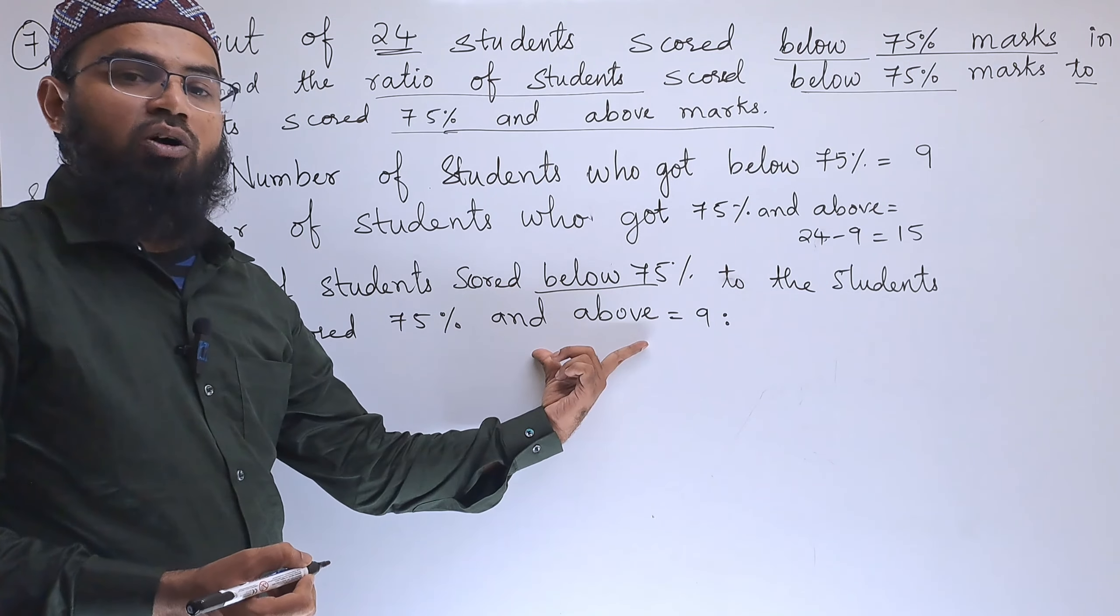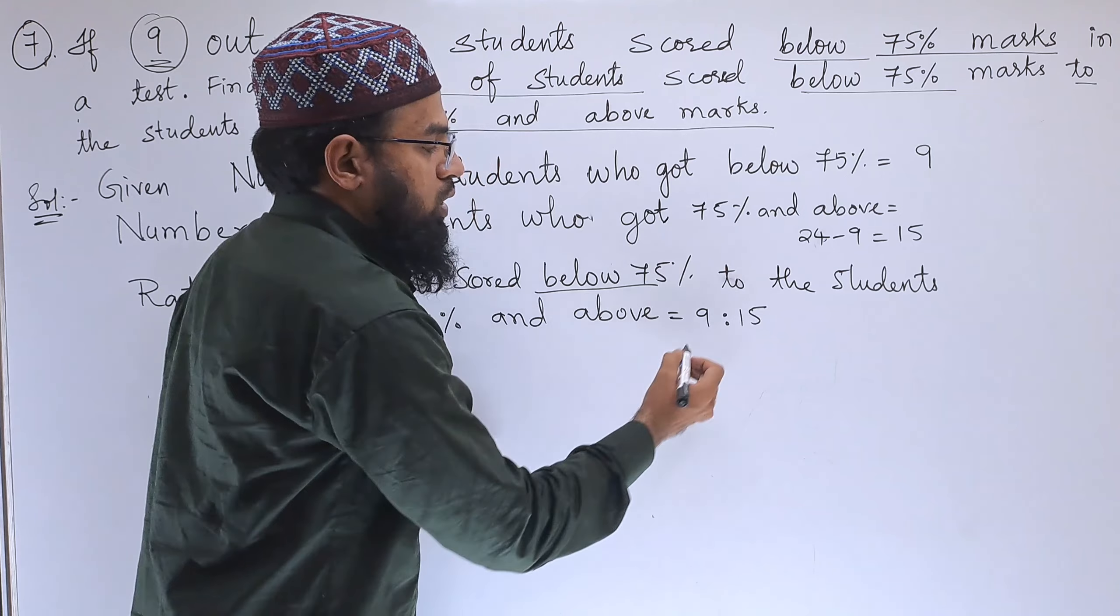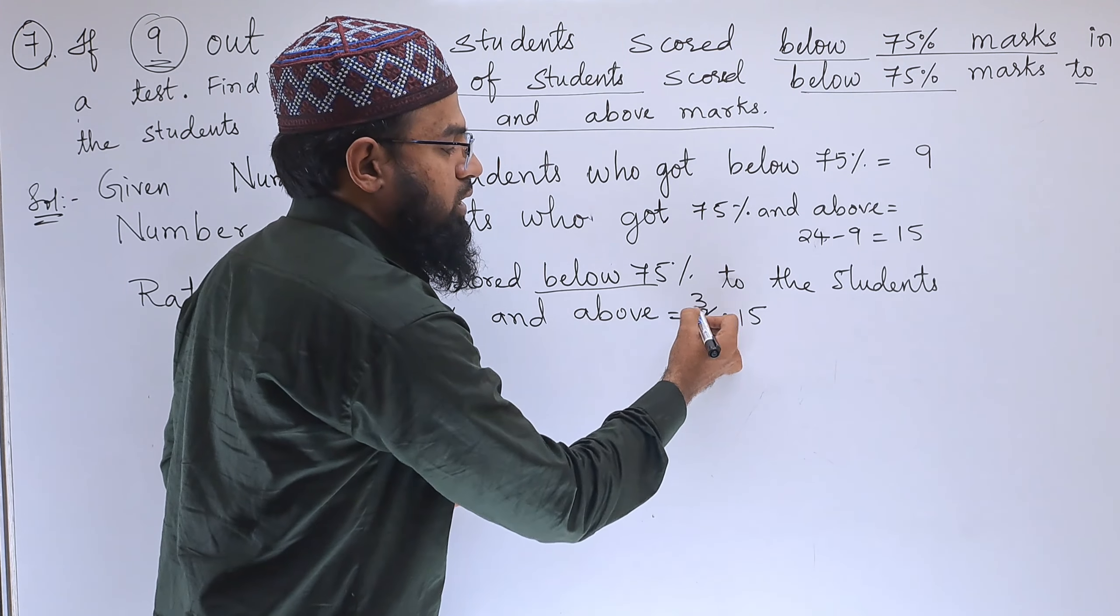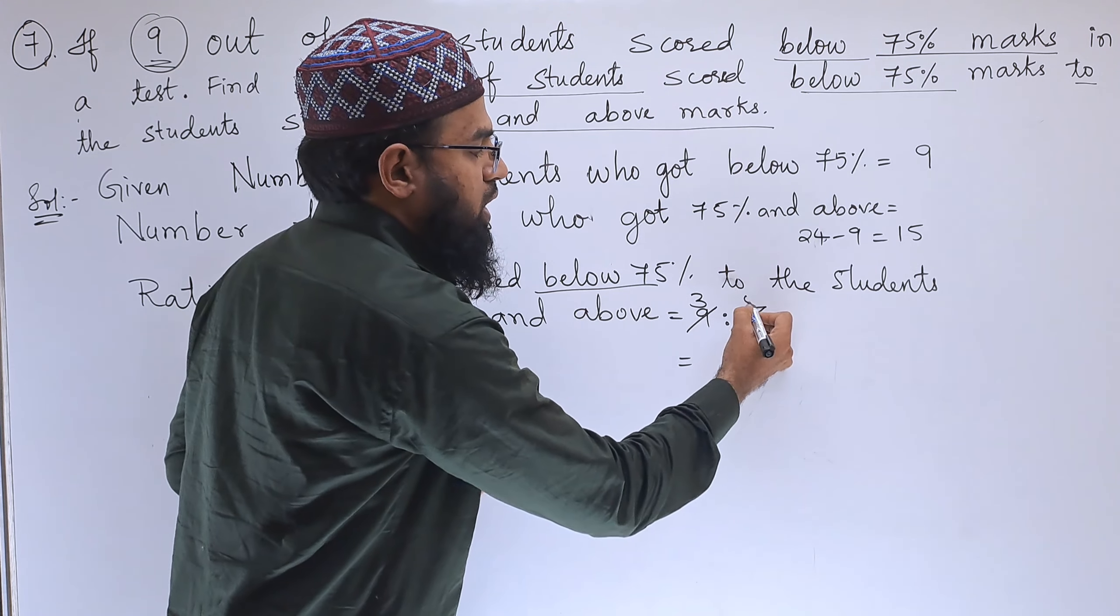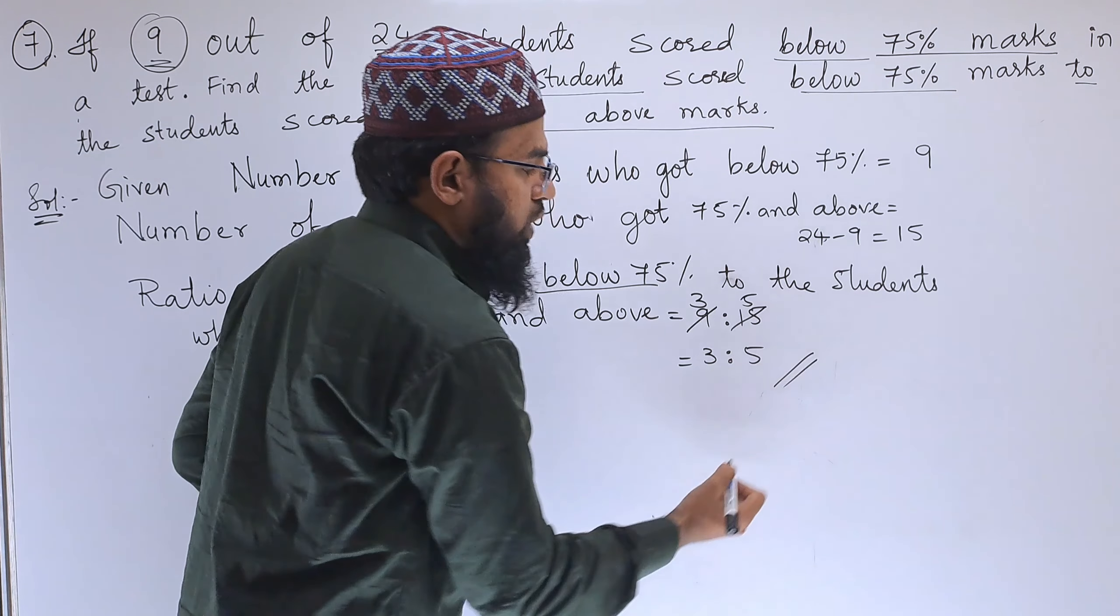Now we can cancel this: 9 divided by 3 is 3, and 15 divided by 3 is 5. So the required ratio is 3 is to 5.